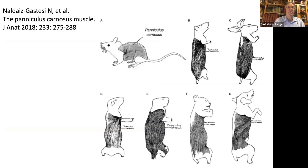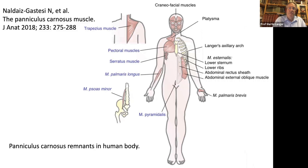Here is a publication from the Journal of Anatomy about the panniculus carnosus. You can see several mammals who have the panniculus carnosus all over the body. And here is the actual presentation of the remnants of the panniculus carnosus in the human body. It's not only the platysma and the palmaris brevis, but also the palmaris longus, the serratus muscle, the pectoral muscle, and the trapezius muscle seem to be remnants of this muscle.